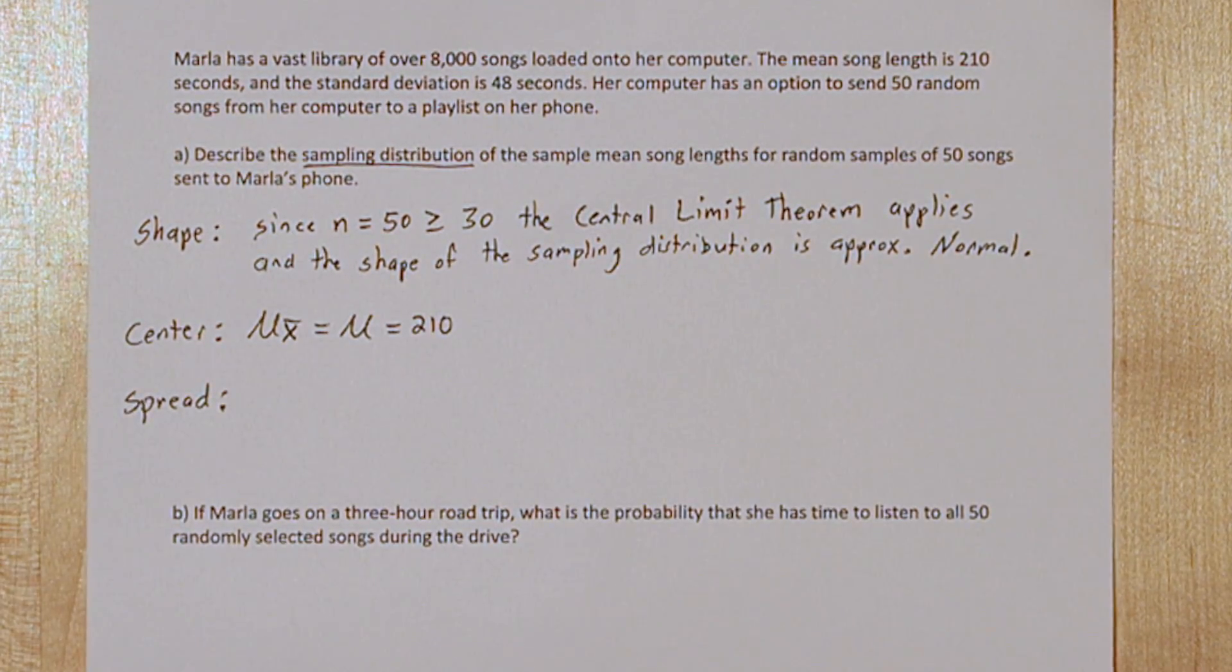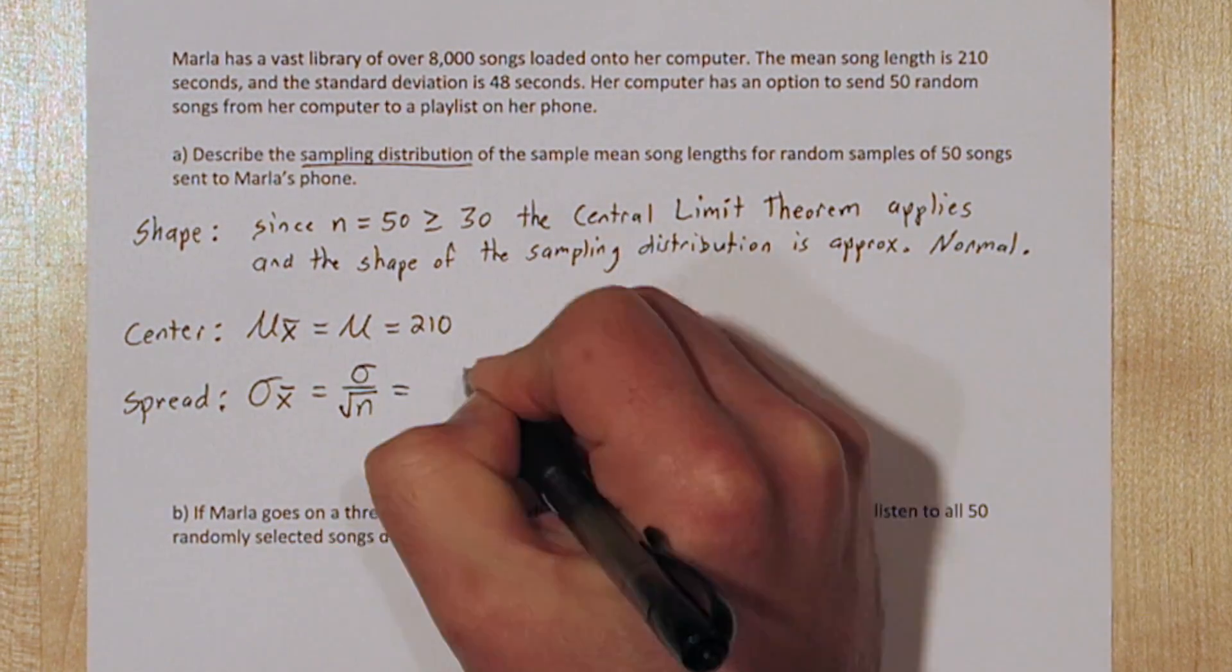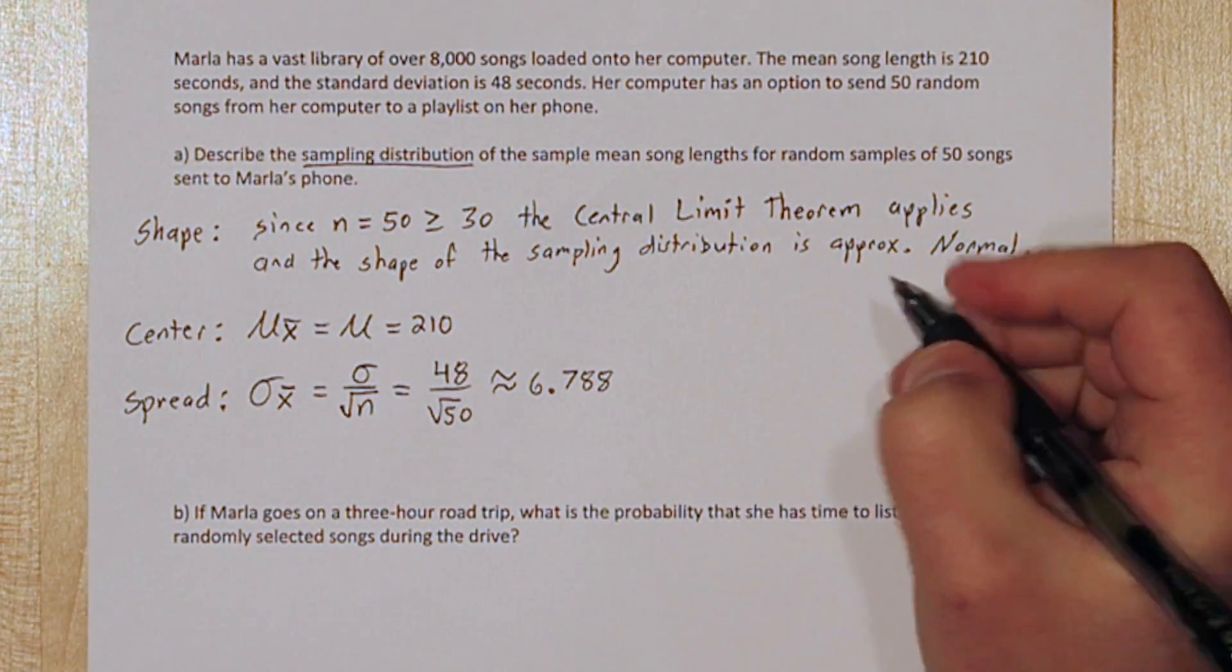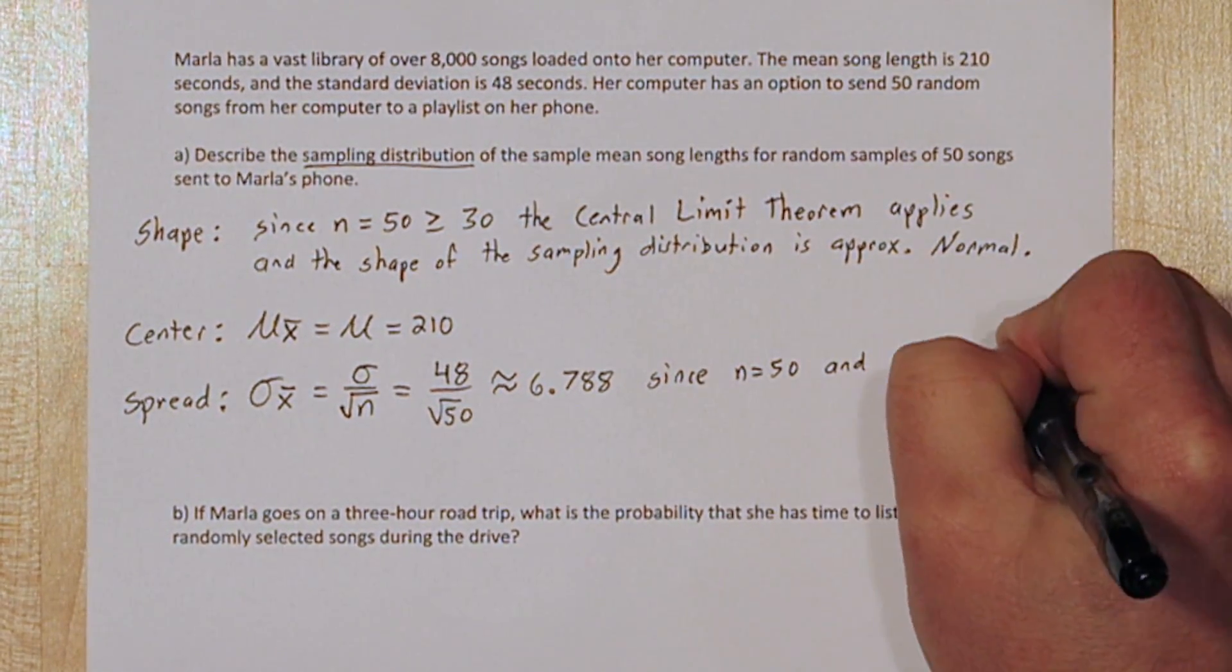To calculate the standard deviation, we need to check the 10% condition. Since 50 songs is far less than 10% of the total 8,000 songs, the 10% condition is met, and we can calculate the standard deviation.